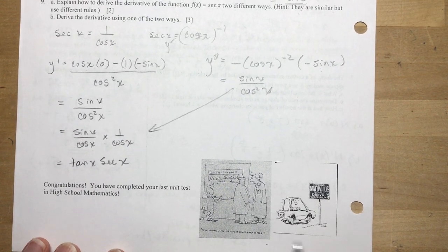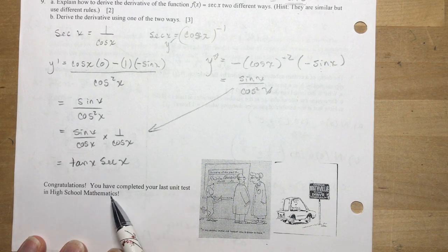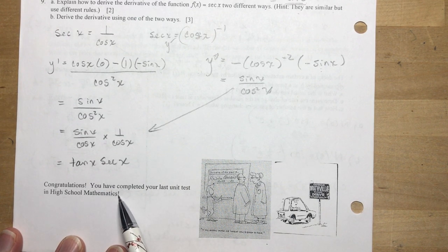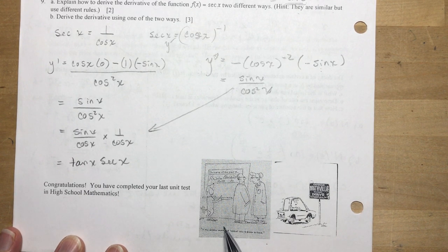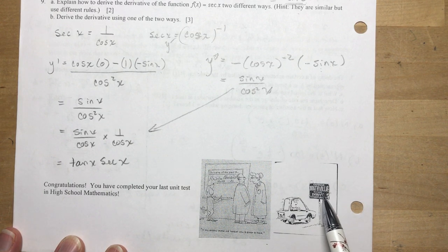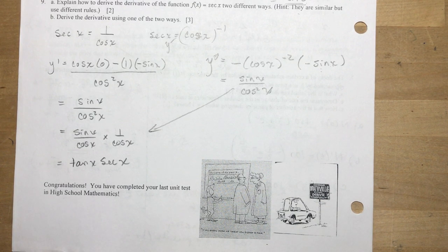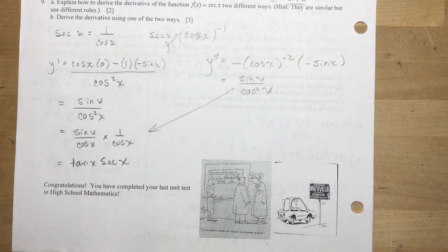The end of this test says: 'Congratulations, you've completed your last unit test in high school mathematics' — that's if you did calculus second. There are some funny signs: 'How do I get out of math?' and 'Entering Mathville — please derive carefully.' I hope this helps you out. It's very long, but you can skim through and find the parts you need. Good luck on your test, and I wish you all the best. Subscribe, tell all your friends, like and comment — bye bye!